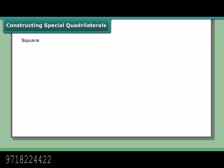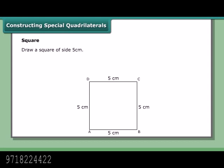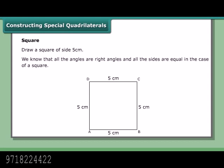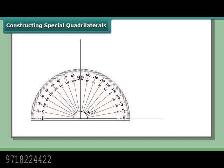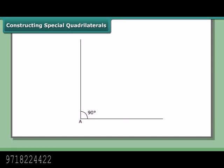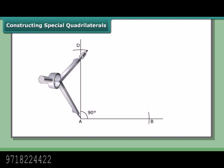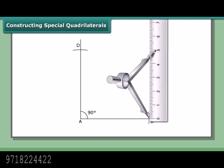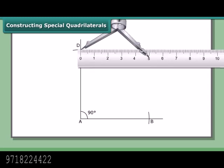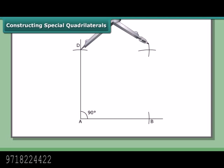Constructing a special quadrilateral — the square. Draw a square of side 5 cm. All angles are right angles and all sides are equal. Steps: Draw a right angle at point A using a protractor or compass and ruler. Set the compass to 5 cm and cut off sides AB and AD along the arms of the right angle. With B as center and the same radius, draw an arc. With D as center and the same radius, draw an arc to intersect the first. Join point C where the arcs meet to B and D. ABCD is the required square.